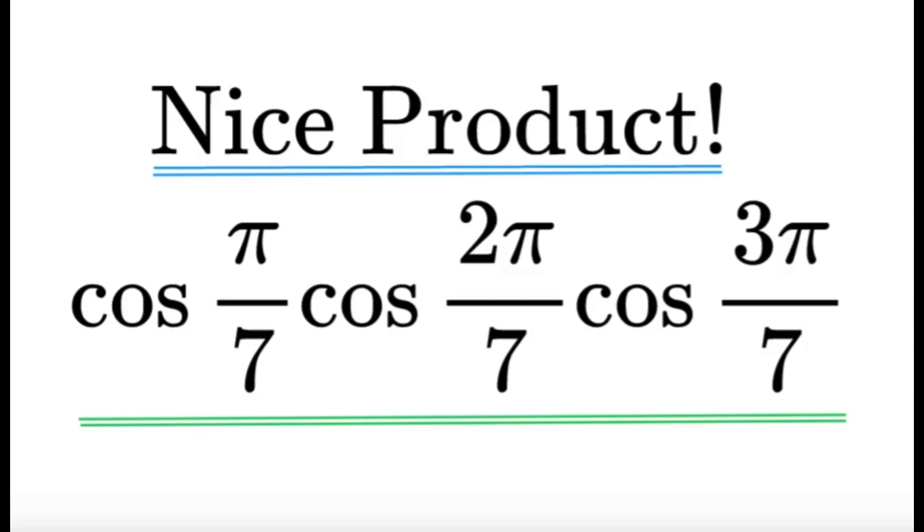Now, one thing to note is that pi over seven, two pi over seven, three pi over seven, they're not special angles at all. So those are not the special angles that we know and love. So we have to do something to it.